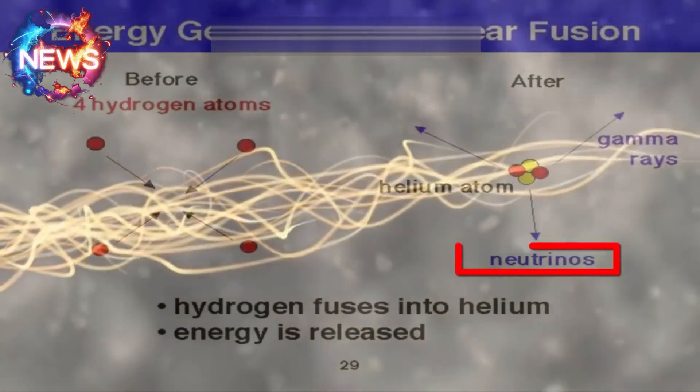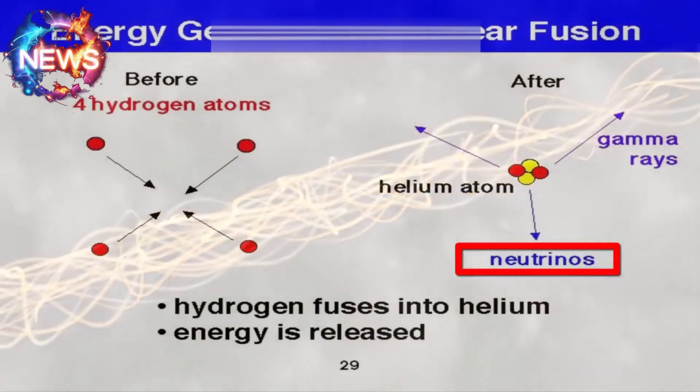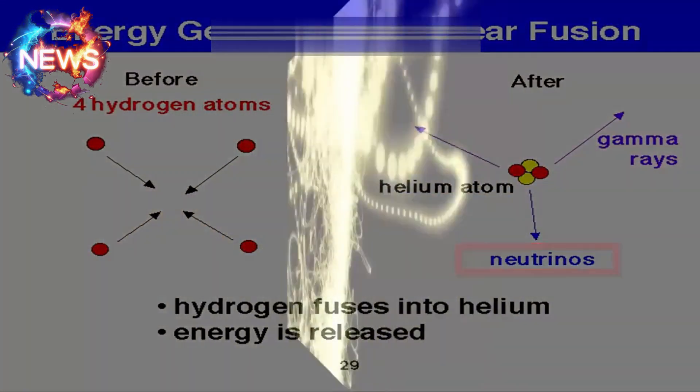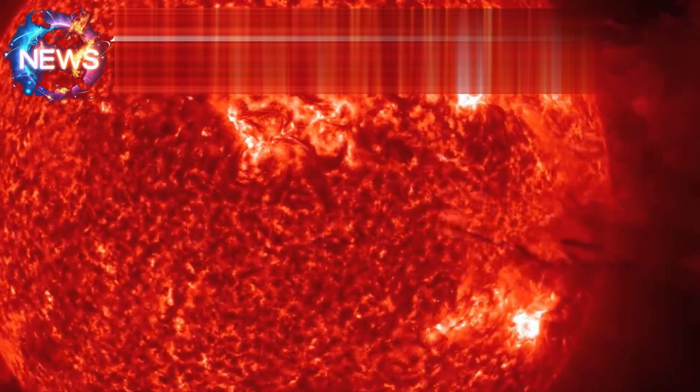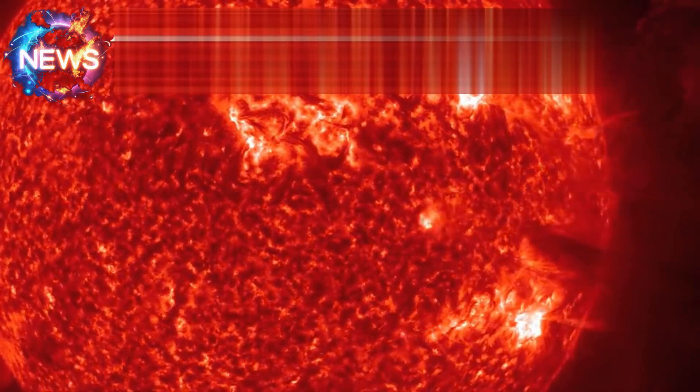The Solar Neutrino Problem: In the 1960s, physicists observed a deficit in the number of solar neutrinos detected on Earth compared to theoretical predictions. This led to various investigations and theories about the properties of neutrinos.